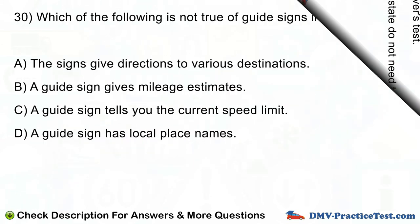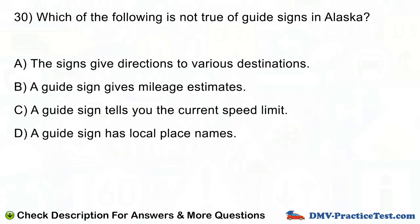Question number 30. Which of the following is not true of guide signs in Alaska? A. The signs give directions to various destinations. B. A guide sign gives mileage estimates. C. A guide sign tells you the current speed limit. D. A guide sign has local place names.